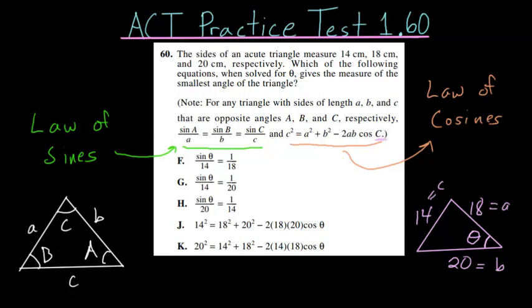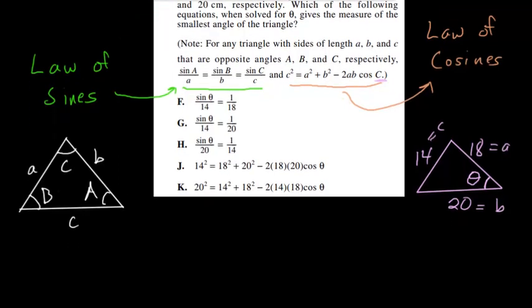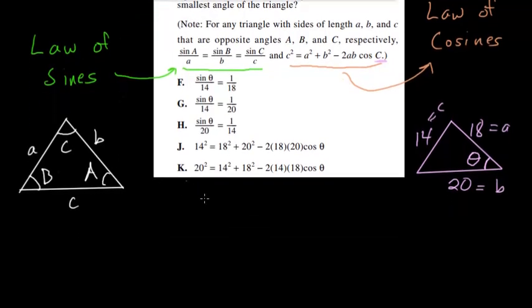So at this point, all we have to do is just plug in our numbers into the equation. So let's clear a little room and go ahead and do that. So we're plugging into the equation c squared equals A squared plus B squared minus 2 times A times B times the cosine of uppercase C.